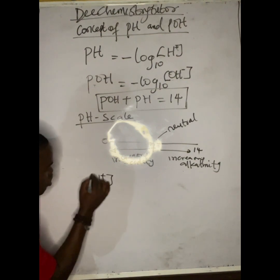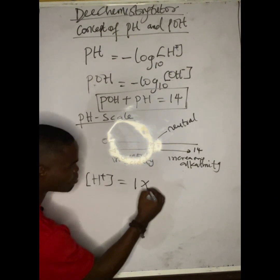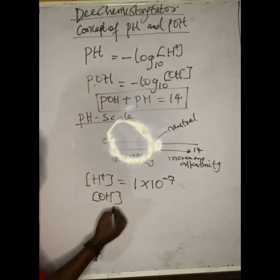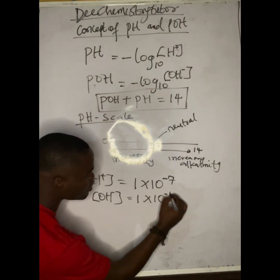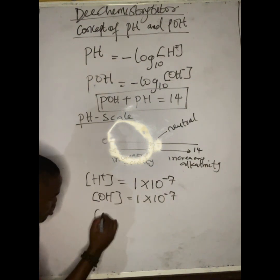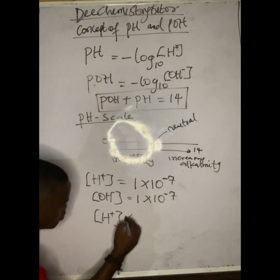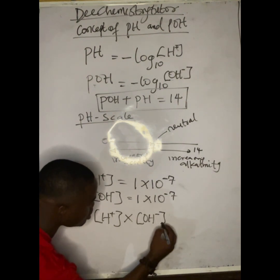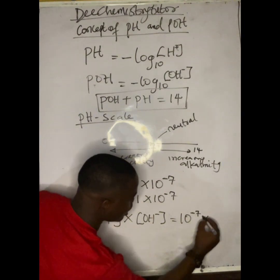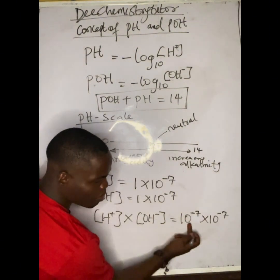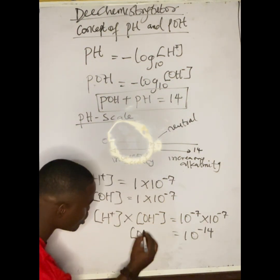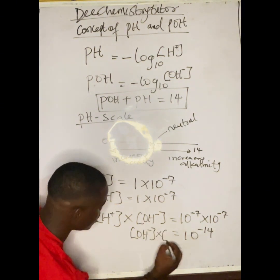The concentration of H⁺ alone in pure water is 1 × 10⁻⁷ mol/L, and the concentration of OH⁻ alone is also 1 × 10⁻⁷ mol/L. So the concentration of H⁺ multiplied by the concentration of OH⁻ equals 10⁻⁷ × 10⁻⁷, which — since the bases are the same — gives 10⁻¹⁴.